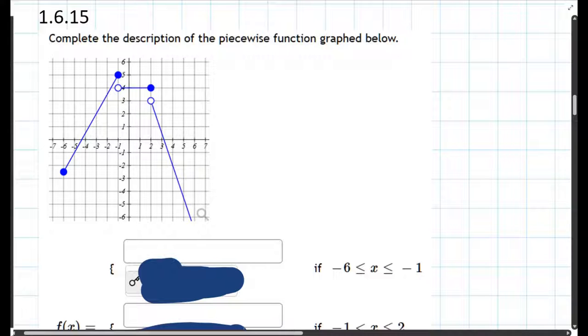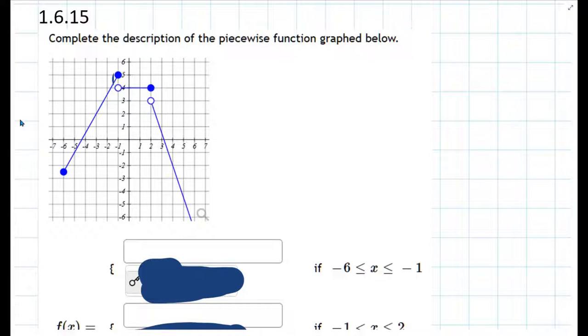So we have a graph, and we're supposed to write down the three pieces that make this up. I think the easiest piece is going to be the middle one, the middle one right here.